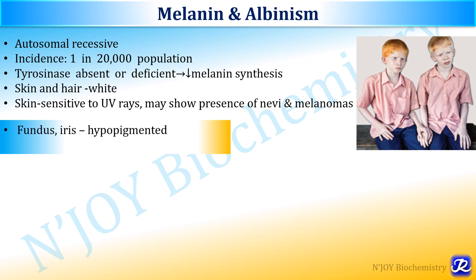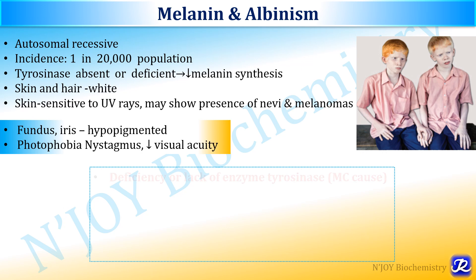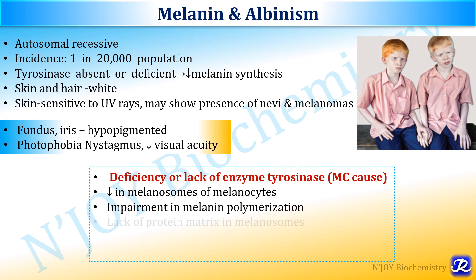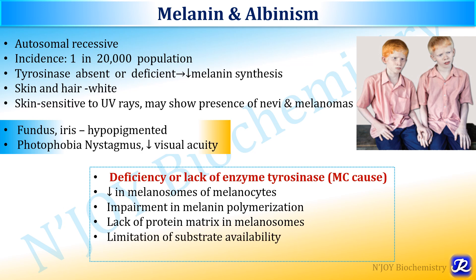Albinism is an autosomal recessive condition with an incidence of 1 in 20,000 population. Tyrosinase enzyme is absent or deficient, responsible for decreased melanin synthesis all over the body. Clinical features include photophobia, nystagmus, and decreased visual acuity. Fundus examination shows hypopigmented iris. Various causes include deficiency of tyrosinase, decrease in melanosomes in melanocytes, impaired polymerization of melanin, lack of protein matrix in melanosomes, limitation of tyrosine substrate availability, and presence of tyrosinase inhibitors. The most common cause is deficiency of tyrosinase.